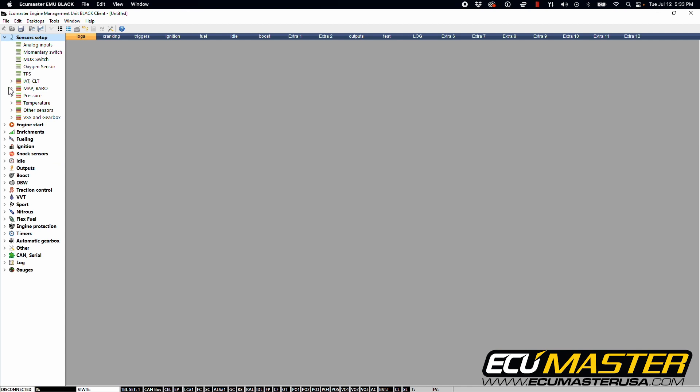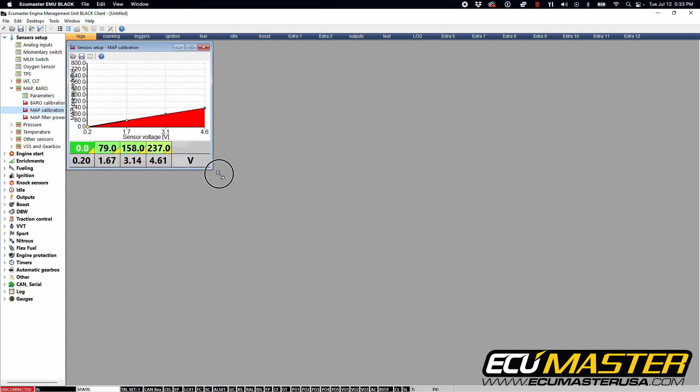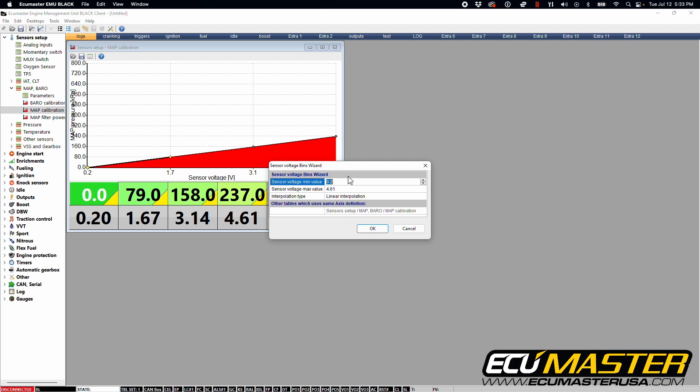Next, we're going to go to sensor setup. We're going to go into our map and barrow table, go into parameters, deselect use built-in map. Next, we're going to go into map calibration. We'll pull this open so you guys can follow along a little easier here. And we'll go into our x-axis bins wizard by right clicking over the numerical value for voltage here. So for sensor voltage minimum value, we're going to use the value of half a volt or 0.5 because that is what the sensor is measured for. And you can see that on the back of the package. Sensor voltage maximum value again using the measurement on the back of the package 4.5 volts and interpolation type linear interpolation.